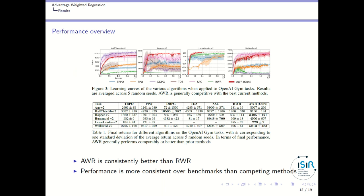Looking at the results, as usual in deep reinforcement learning papers, they show the performance of their algorithm — the red curve — against many competitors. Interestingly, they show that their technique is not always the best: on HalfCheetah they are defeated by DDPG or TD3, and on Walker2D they are defeated by SAC. But they argue that their performance is more consistent over benchmarks than competing methods. You can also see that sometimes SAC is better than DDPG and sometimes the contrary.